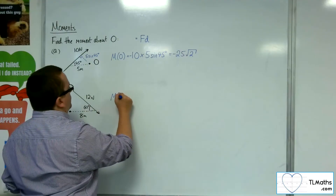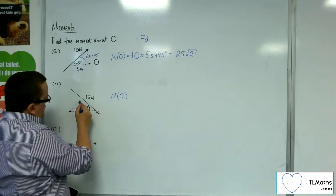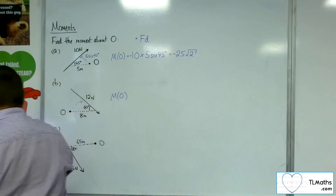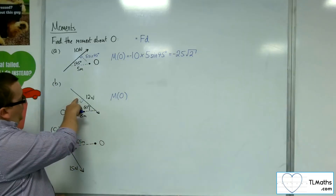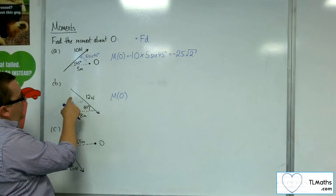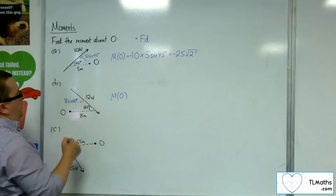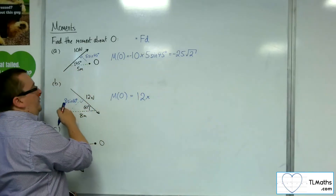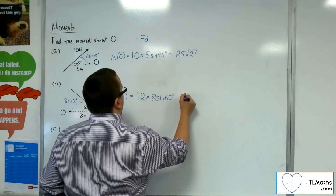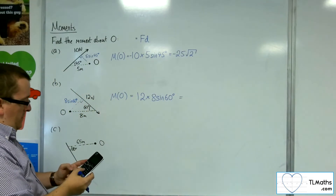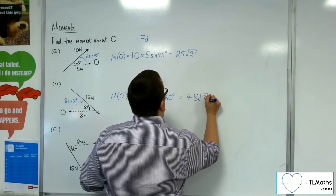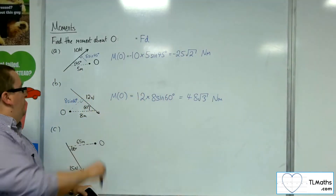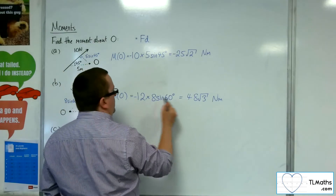For problem B, we complete the right-angled triangle by drawing a perpendicular line through O. This gives us the opposite side over the hypotenuse, so this is 8 sine 60. The moment about O is equal to the force 12 times 8 sine 60. So 12 times 8 times sine 60 is 48 root 3 Newton metres. Because of the direction — going clockwise — this will also be negative.